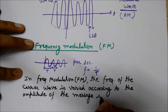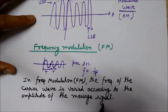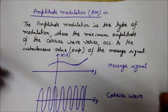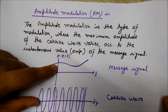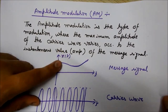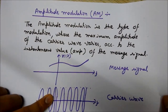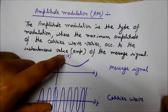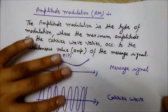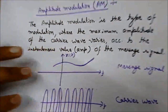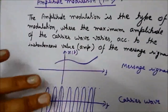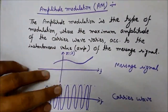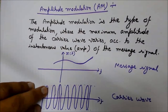The message signal is also called the modulating signal. We are taking this modulating signal — this is the message signal that you want to transmit. And this one is the carrier wave. This was the example of AM, but we are considering these two waves for frequency modulation.